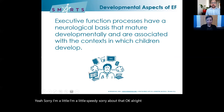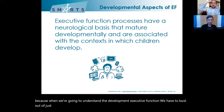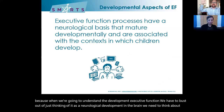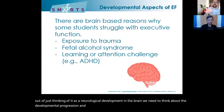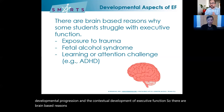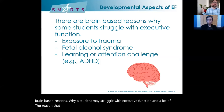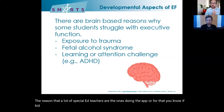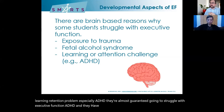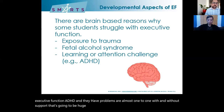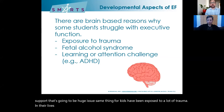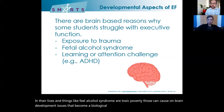When we understand the development of executive function, we have to bust out of just thinking of it as neurological development in the brain. We need to think about the developmental progression and the contextual development of executive function. There are brain-based reasons why a student may struggle — if a kid has ADHD, they are almost guaranteed to struggle with executive function. ADHD and EF problems are almost one-to-one. Same thing for kids who've been exposed to a lot of trauma, fetal alcohol syndrome, or toxic poverty — those can cause brain development issues that become a biological basis for EF struggle.